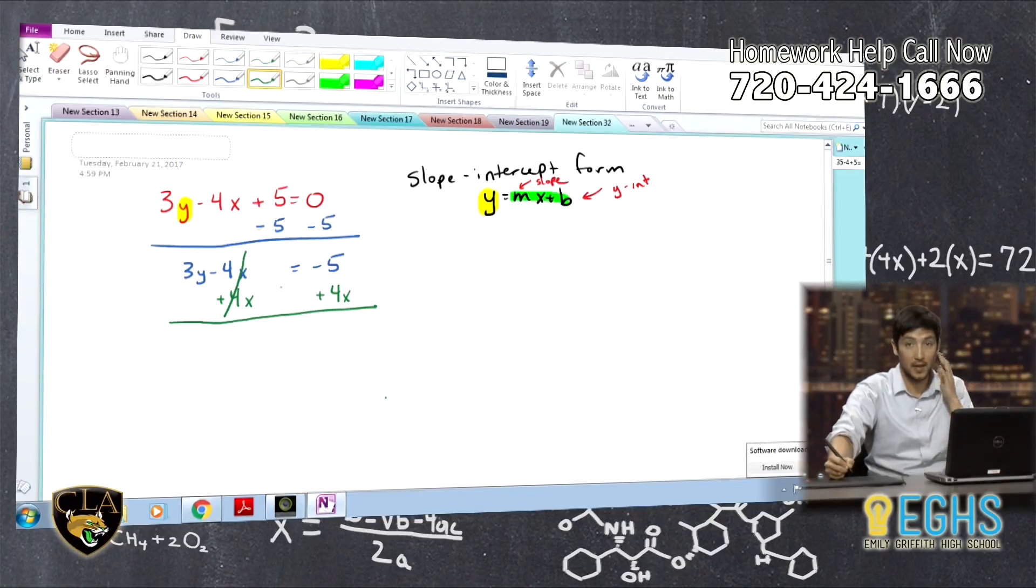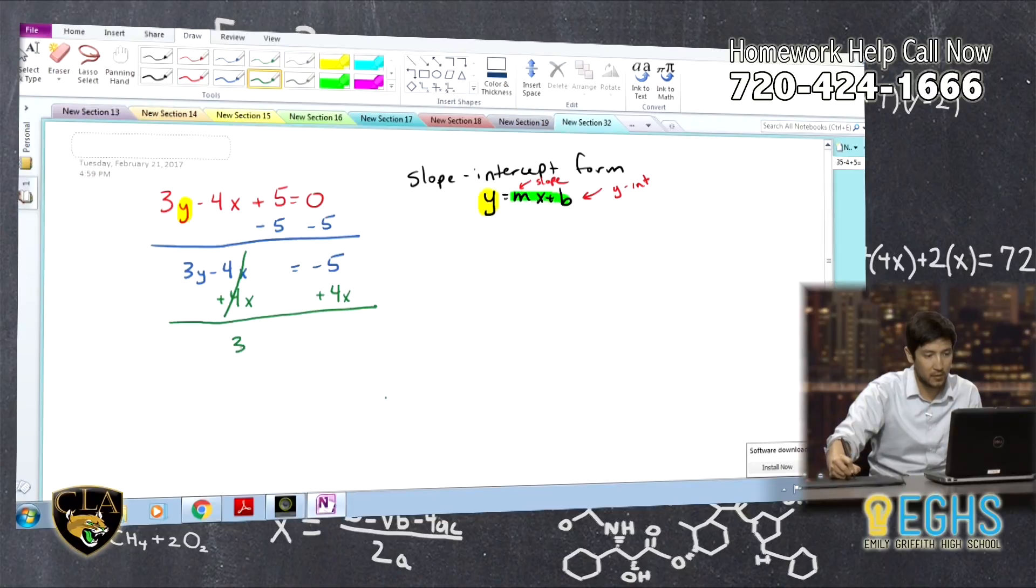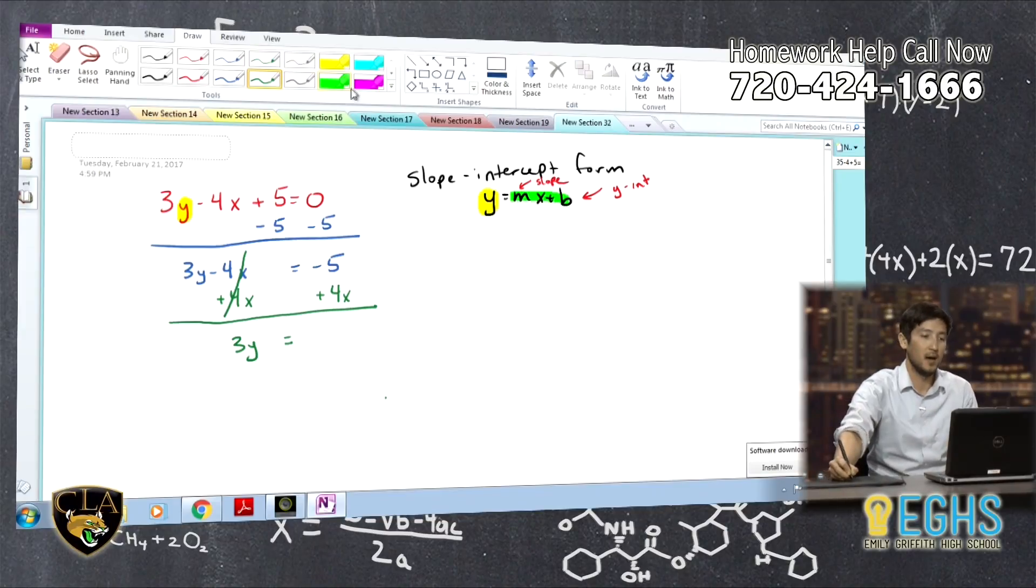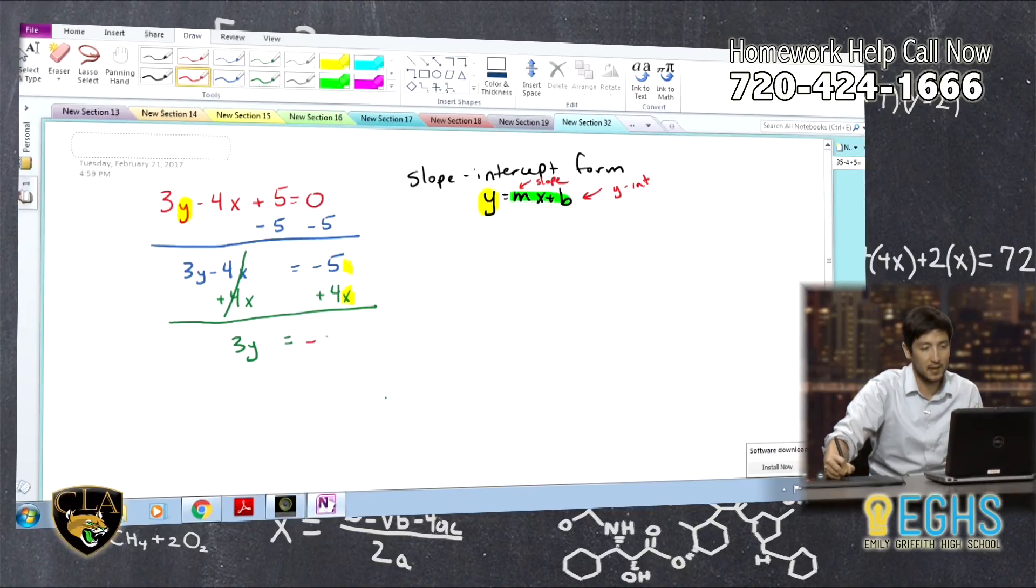So, this cancels out because negative 4x plus 4x is 0. I'm rewriting 3y, that's all that's left over here, equals. And then here, be careful, remember you cannot combine these. This has an x, this does not. So, we're going to just leave it and say, oh, 4x minus 5.